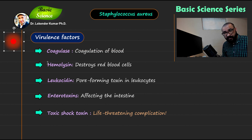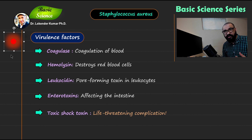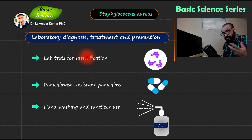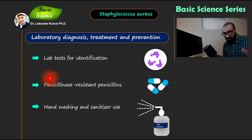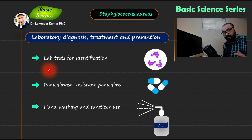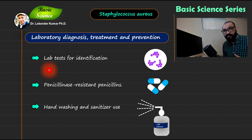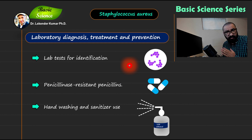We will discuss these virulence factors in detail in separate videos — please comment below if you are interested. Moving to the next slide on lab diagnosis: there are important lab tests to identify and distinguish between Staphylococcus species. For example, you can distinguish Staphylococcus aureus from Staphylococcus epidermidis using gram staining, coagulase test, oxidase test, and cultural characteristics.